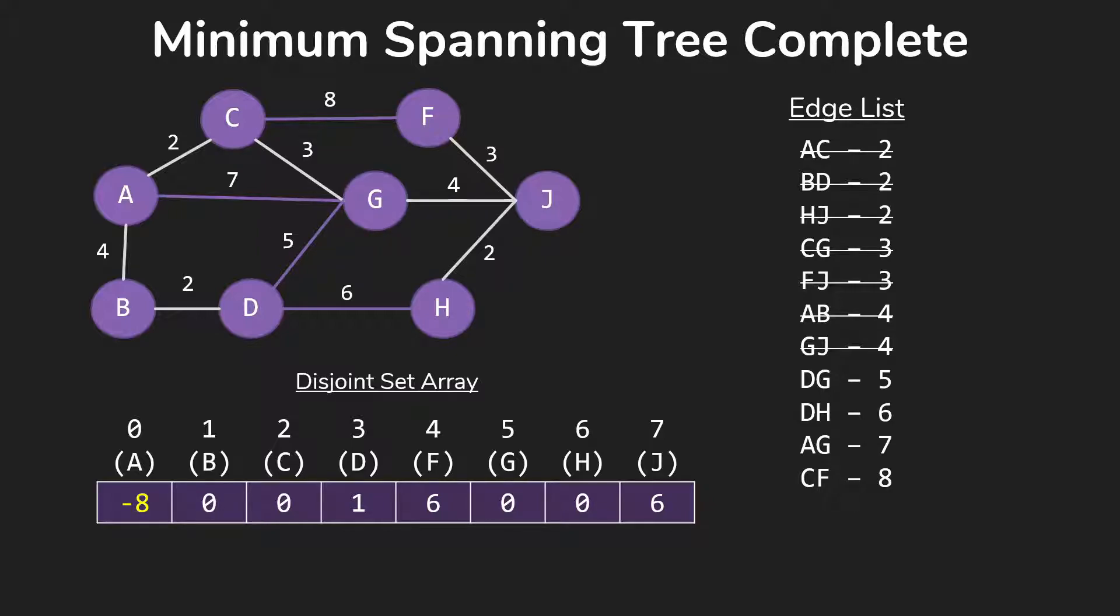So our spanning tree is complete, and we can get the list of edges by looking at all the edges we put into the tree, which in this case is all of the edges we looked at. And of course, we can get our cost, which is once again 20, just as it was with Prim's algorithm, by simply adding up the cost of the edges.